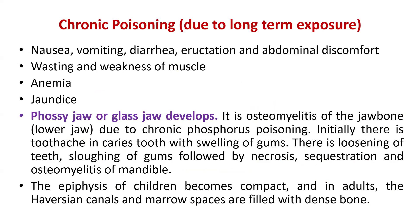Chronic poisoning results from long-term exposure and the symptoms are different from acute poisoning. These include nausea, vomiting, diarrhea, eructation, and abdominal discomfort — all GIT-related symptoms. There is also wasting and weakness of muscles, anemia, and jaundice. Importantly, there is phossy jaw — also called glass jaw — which is osteomyelitis of the jaw bone due to chronic phosphorus poisoning. This is an important MCQ topic.